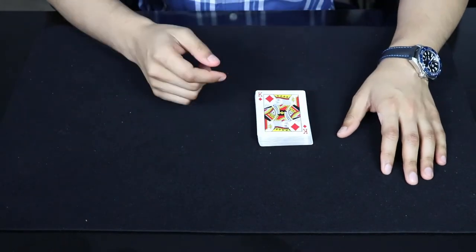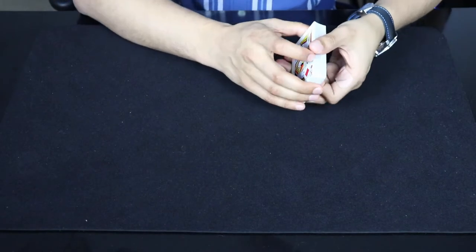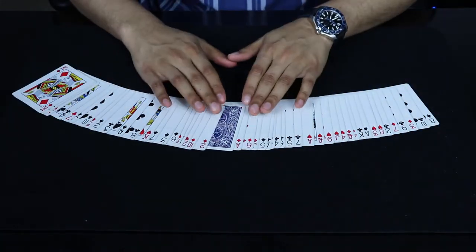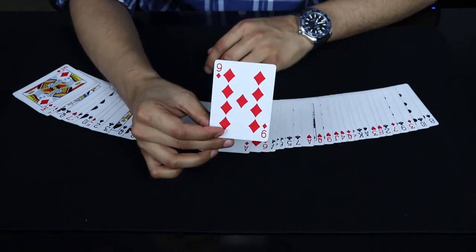Now the spectator's card was the Nine of Diamonds. And just with a quick shake, we'll see all the cards are facing up except one card. And that card is the Nine of Diamonds.